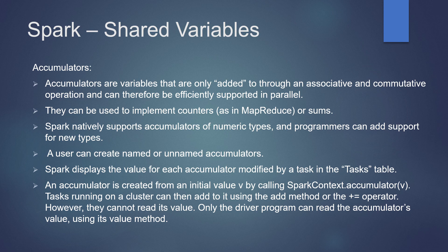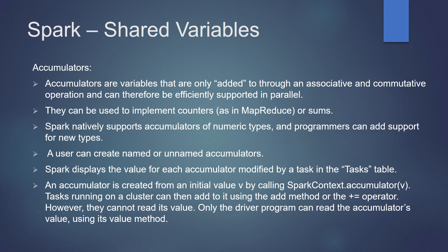We can create named or unnamed accumulators. Spark displays the value for each accumulator modified by a task in the tasks table, which is available in the Spark web UI. Accumulators are created by calling SparkContext.accumulator with the required value. Tasks running on the cluster can then add to it using the add method or the plus-equal operator. However, tasks cannot read the accumulator's value — only the driver program can read it using the value method.